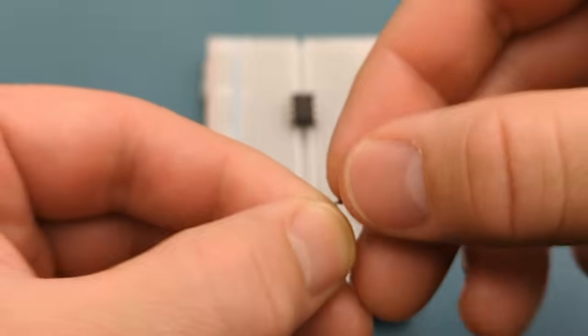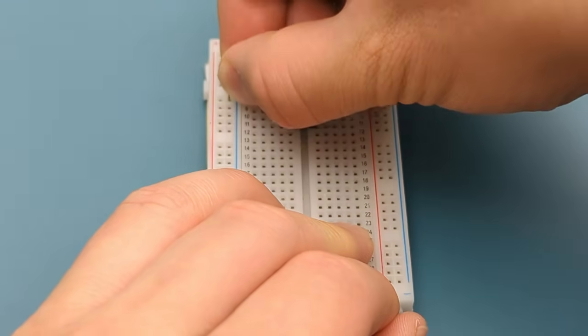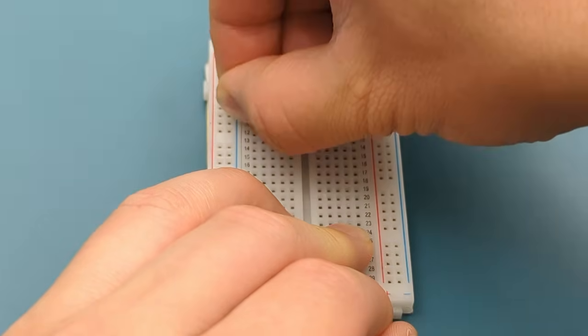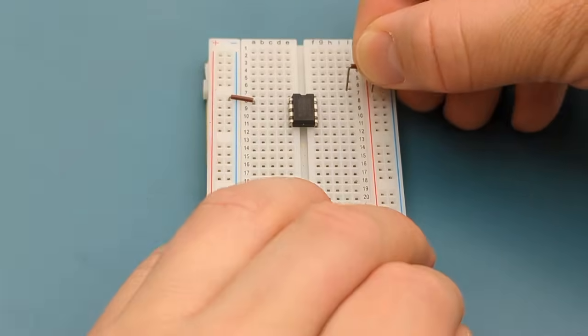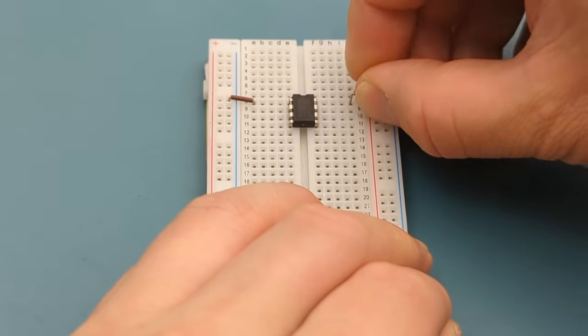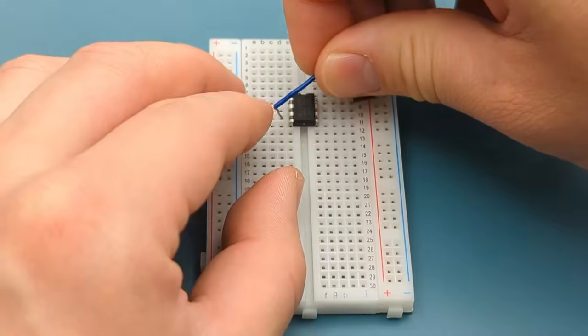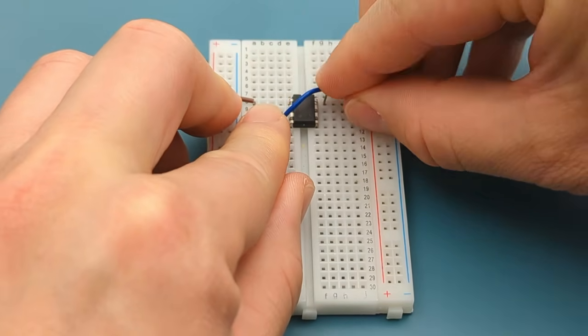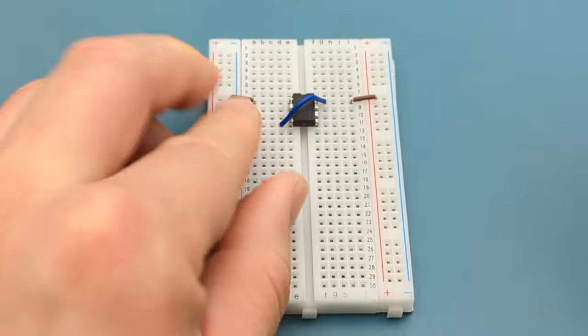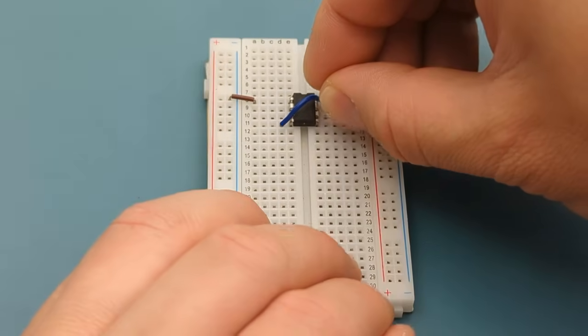A jumper wire connects pin 1 or ground to the negative rail. A jumper wire connects pin 8 or VCC to the positive rail. Use a jumper wire to connect pin 4 or reset to pin 8 or VCC. Use a jumper wire to connect pin 6 or threshold to pin 7 or discharge.